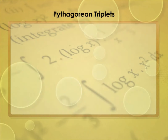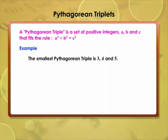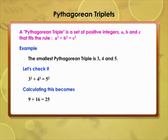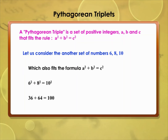Pythagorean triplets: a Pythagorean triplet is a set of positive integers a, b, and c that fit the rule a² + b² = c². The smallest Pythagorean triplet is 3, 4, and 5. Check: 3² + 4² = 9 + 16 = 25 = 5². Another example: 6, 8, 10, where 6² + 8² = 36 + 64 = 100 = 10².